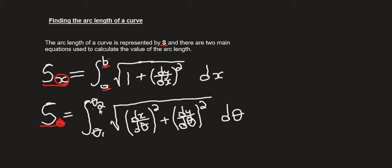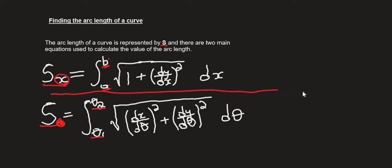t₂ is the upper limit and t₁ is the lower limit. So that is the equation up there. Now we are going to use an example equation below.